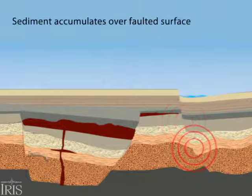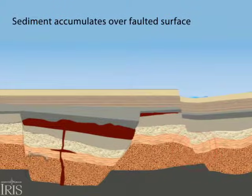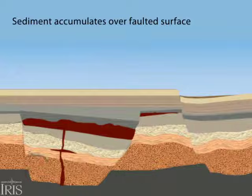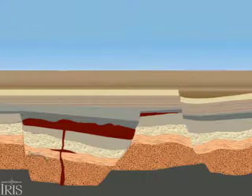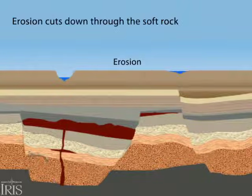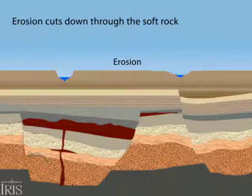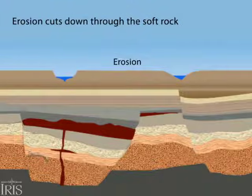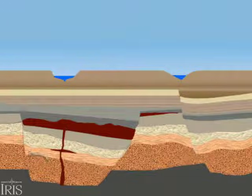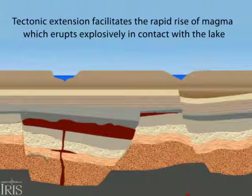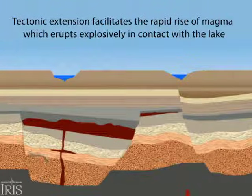Multiple processes contribute to the accumulation of sedimentary strata. Broad uplift, due to renewed extension, is accompanied both by down-cutting as well as by the slow rise of magma below the thin crust.